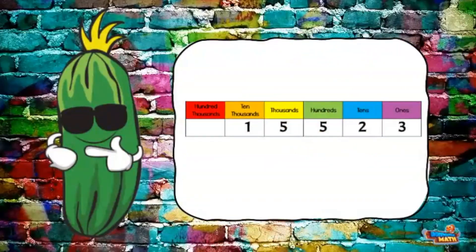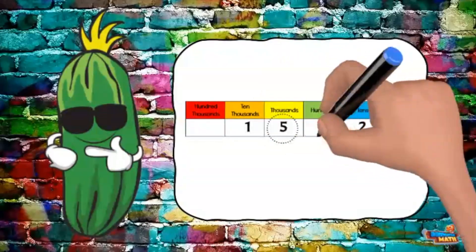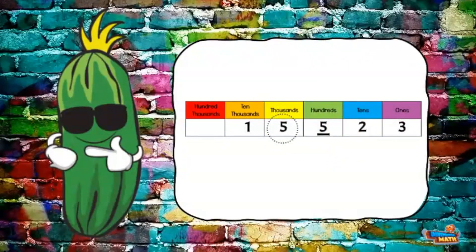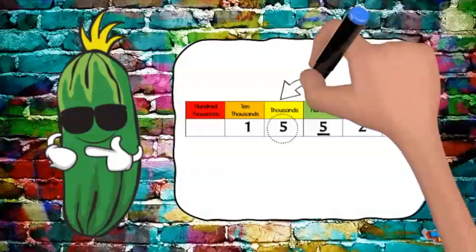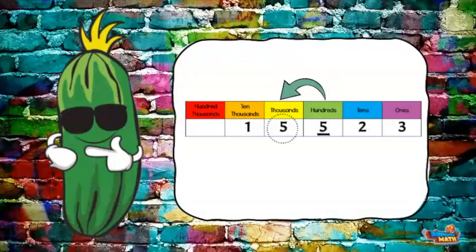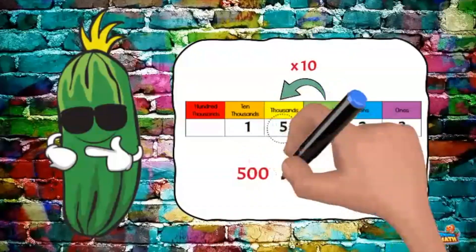Here is the number 15,523. This time we will compare the relationship between the underlined number and the circled number. Start in the hundreds place. We move one place value to the left. The place value has gotten 10 times larger. 500 times 10 equals 5,000.